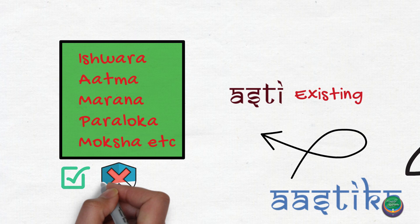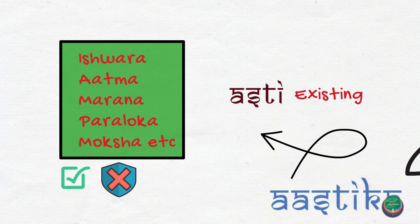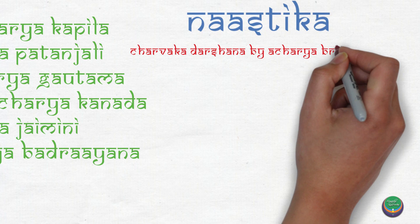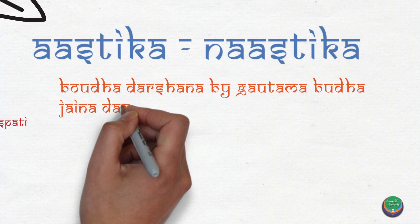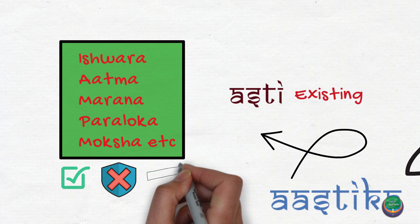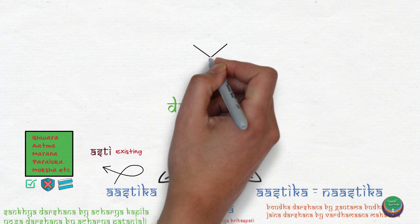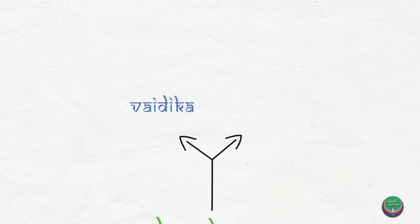The nasthika darshanas are those who do not accept the concepts of Ishwara, Atma, Marana, Paraloka, and Moksha, and they include Charvaka darshana by Acharya Brahaspati. The asthika-nasthika darshanas include Bhaudha darshana by Gautama Buddha and Jaina darshana by Vardhamana Mahavira, as they accept certain concepts among those accepted by asthika darshana. These darshanas are also classified on the basis of whether or not they accept the principles of Veda, as Vaidika darshanas and Avaidika darshanas.